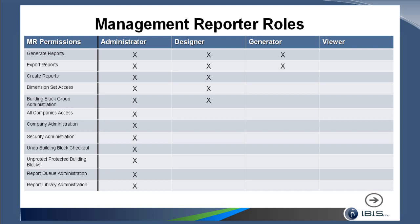The next level below is the Designer role, which has the first five permissions: generate reports, export reports, create reports, access dimension sets, and building block group administration. Generator is just generating and exporting reports. And then the Viewer — they are only able to view reports and can't do anything else.